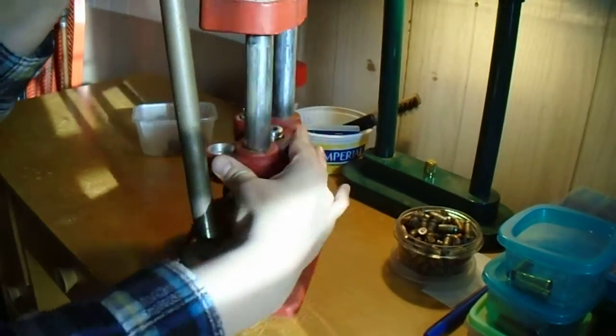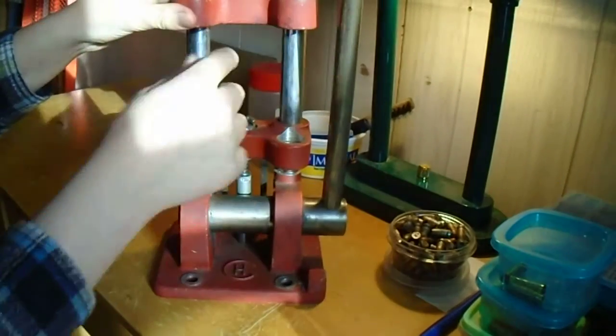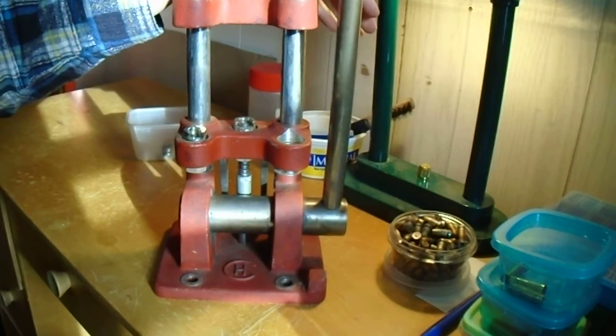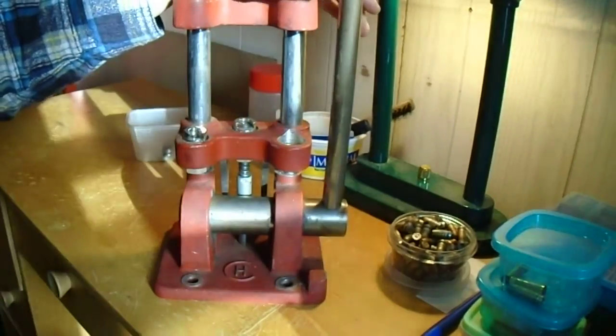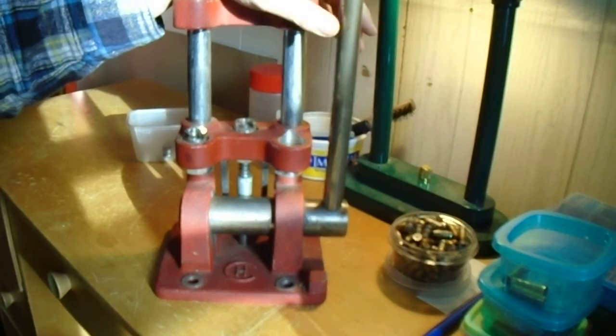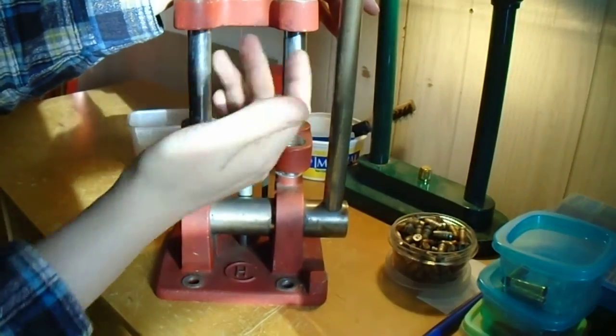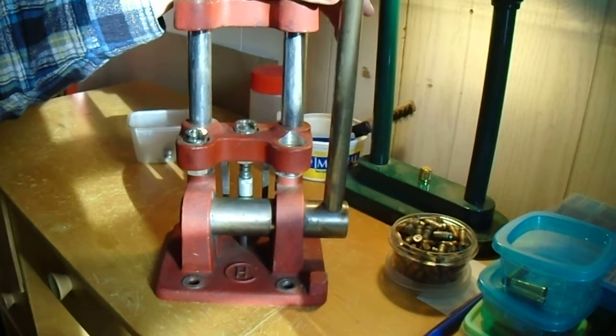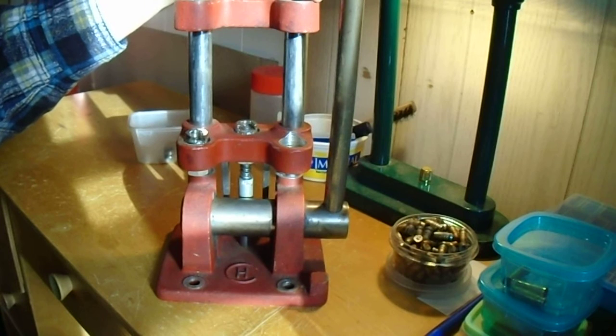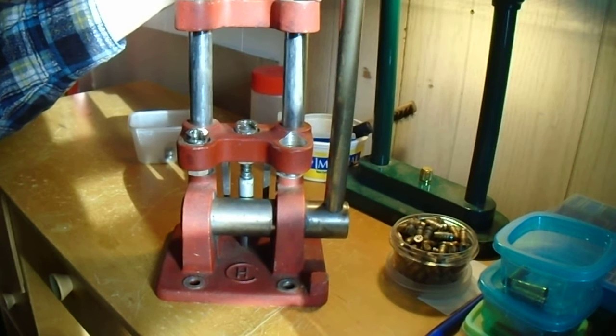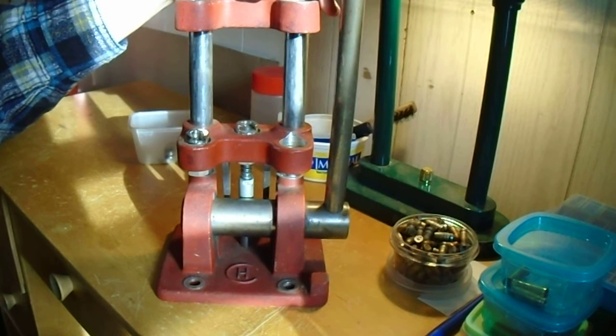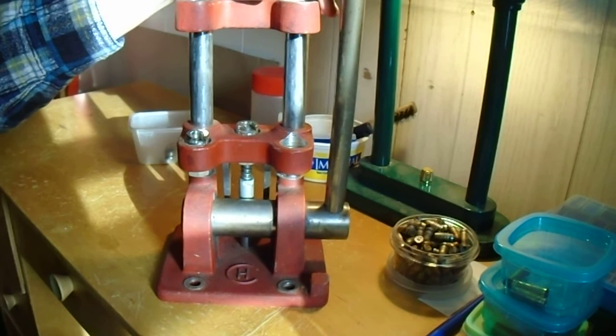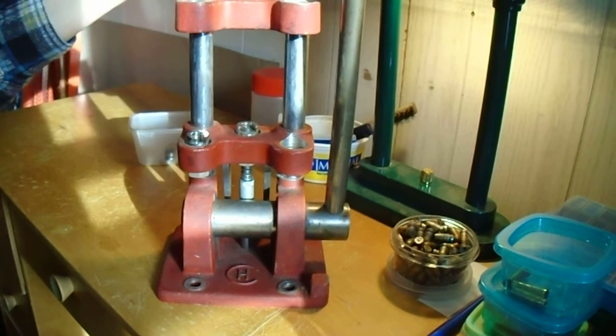But I don't technically need the priming station there, I suppose. I could prime separately and then just use the three stages for flaring and belling and seating and stuff like that. But I don't know. I'd probably be better off buying one of the, what was it, that Redding with the seven stations on top than I don't have to worry about all this stuff.